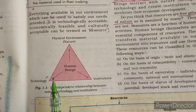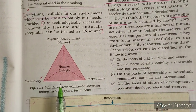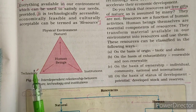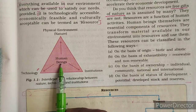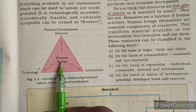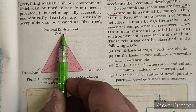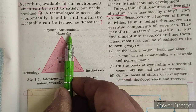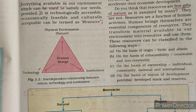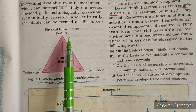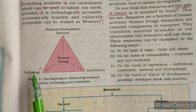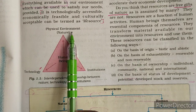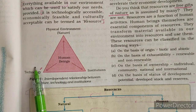Now let us look at this figure. This figure shows how human beings interact with nature. Human beings extract resources from nature — we call that raw material. And how do we extract minerals and resources? With the help of technology.